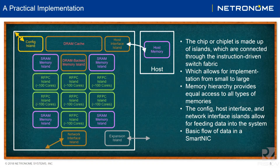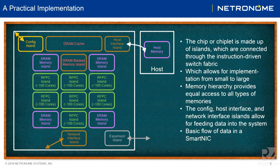A load balancer, which is part of the hierarchical memory structure, decides what memory to assign that packet to — usually one of the SRAM memories sitting in the four corners of this block diagram. The packet is pushed to an SRAM. Once the SRAM has received the packet, a transactional memory unit that controls the flow of packets assigns it to a processor. It will autonomously push the appropriate metadata and first N bytes of the packet to the assigned processor and wake that processor up for processing.